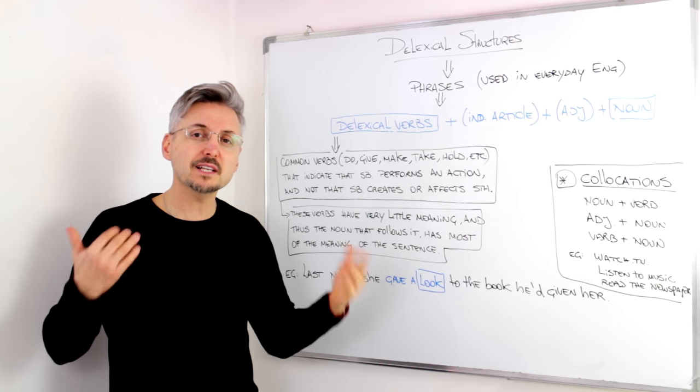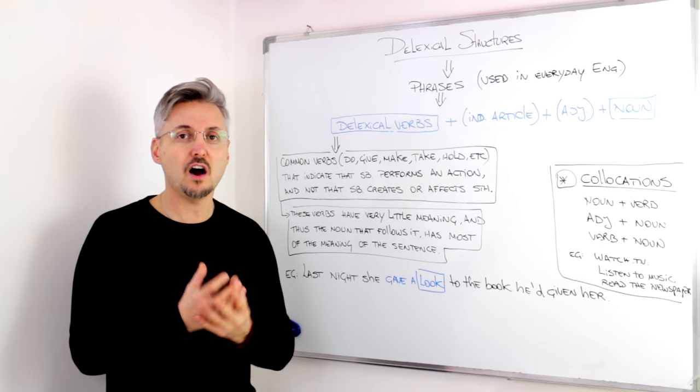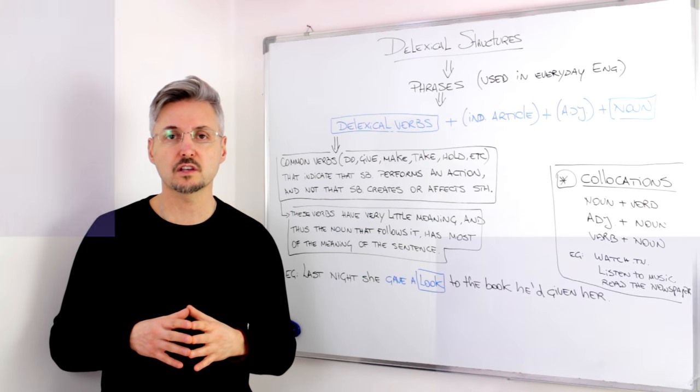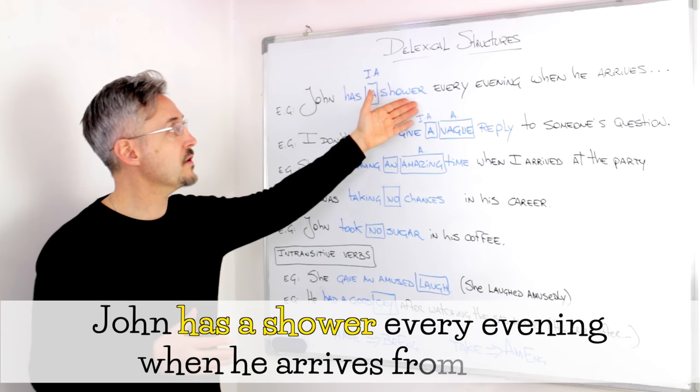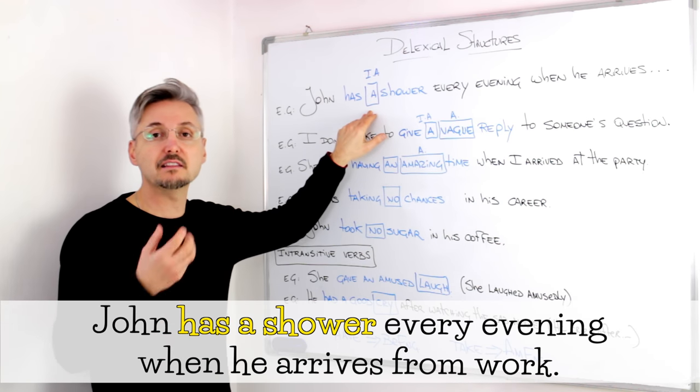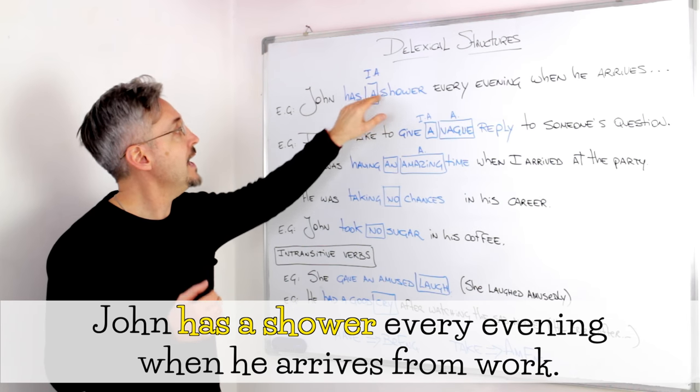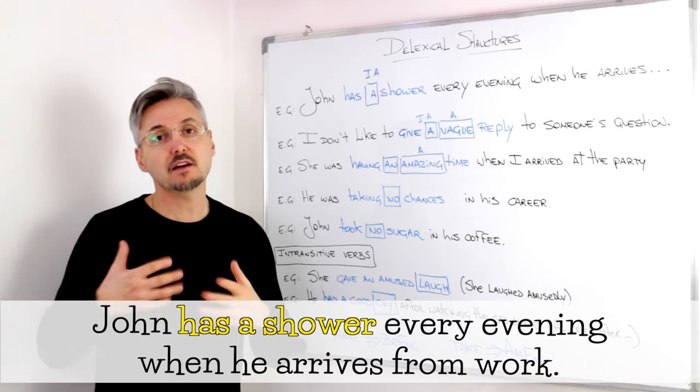I'm going to give you more examples, just to give you the whole idea of the lexical structures. John has a shower every evening when he arrives from work. In this case, we have the indefinite article, a. A shower every evening when he arrives from work.